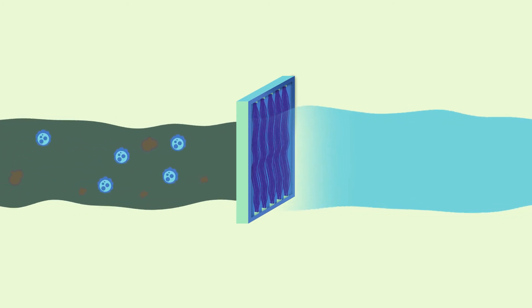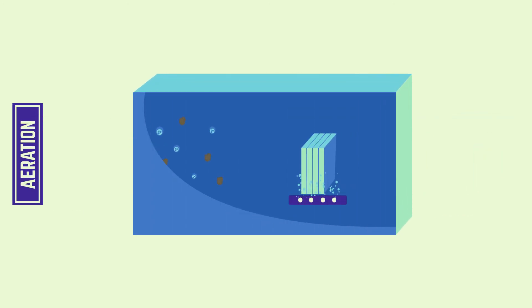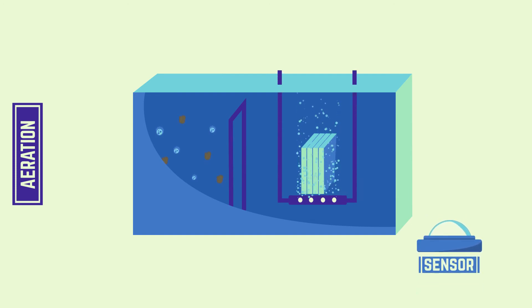This is achieved by a membrane, which is a filter that effectively retains pathogens and solids. This membrane also requires aeration, which has also been automated to adjust it to the varying needs of the plant.